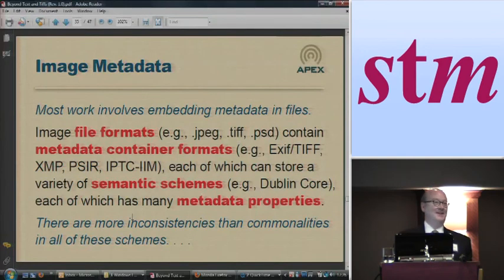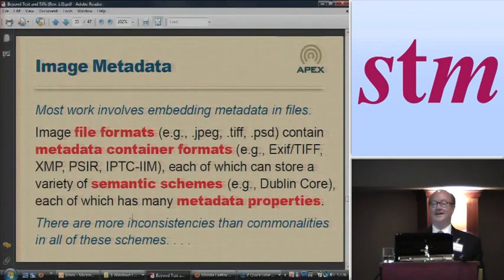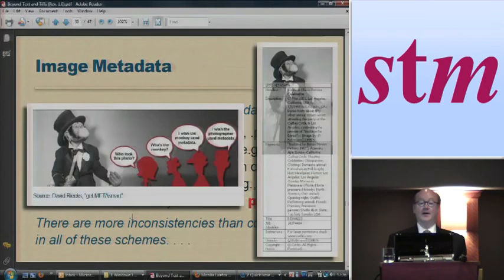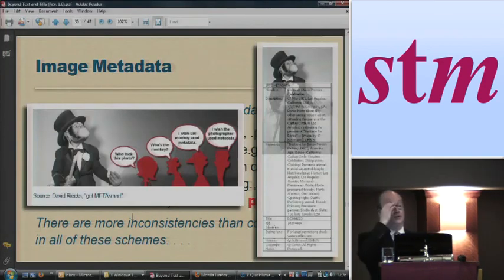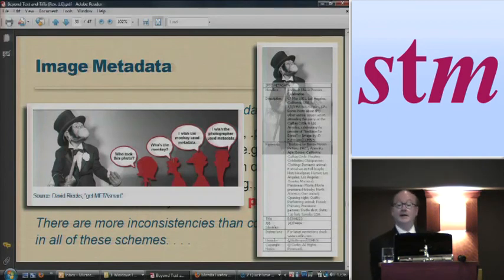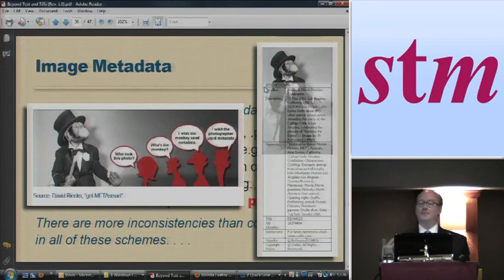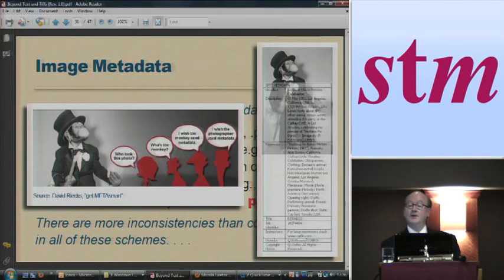All of those different things are ways of describing metadata, and you can pack some but not all of them in all of those file formats. Even within the metadata formats, you've got a variety of semantic schemes, and even within those you've got different metadata properties. Here's an example — a publicity photo for Bedtime for Bonzo. The metadata includes an IPTC item called Headline: 'Bonzo at Movie Premiere Celebration.' There's a description, but notice it's just running text with no structure, no standardization — just whatever anybody wanted to put in the description.